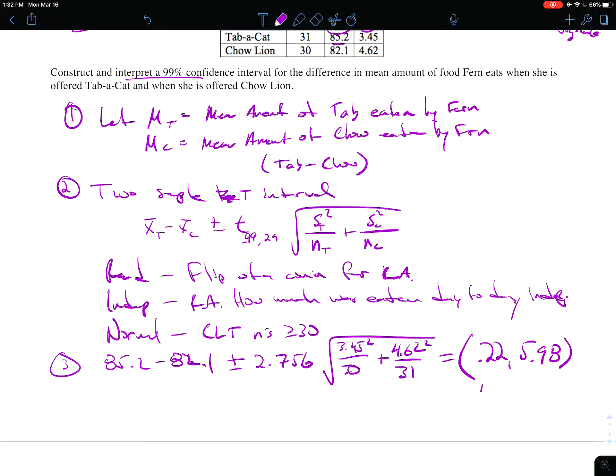And this is going to result in an interval, if you do all the math, to 0.22 and 5.98. From the calculator, we'll just sneak that in here, is a little bit more narrow of an interval: 0.3 to 5.9. That's from the calculator because it uses that, well for this particular problem, would have ended up being 53.64 degrees of freedom, that weird calculation that you don't need to know.